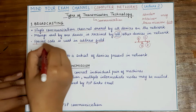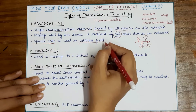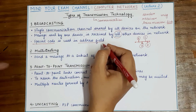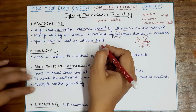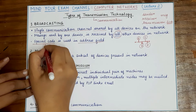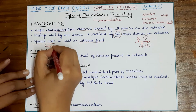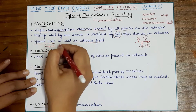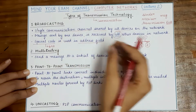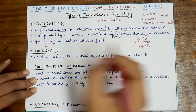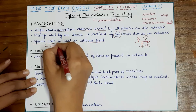Instead, a special code will be put in the destination address field. Every time a device on the network receives that message, it will see that in the destination address field the special code — which indicates that this is a broadcast message — is present. Therefore, every machine except the sender which is present on the network will accept this broadcast message.